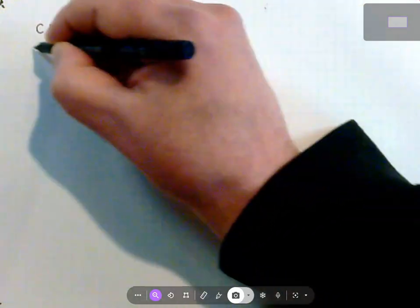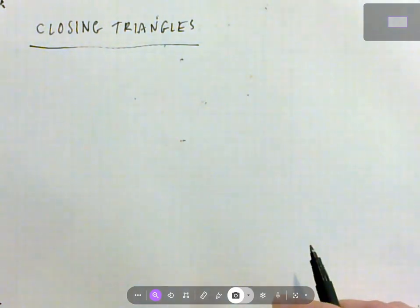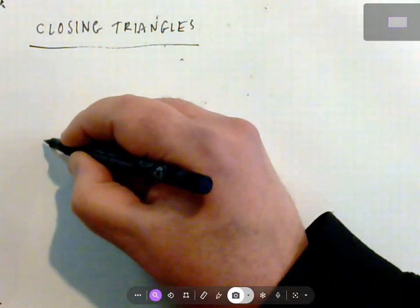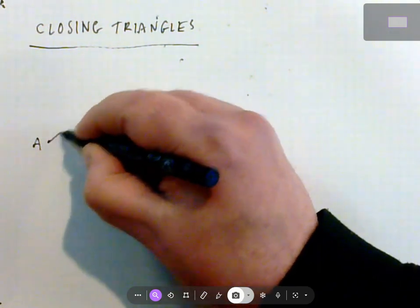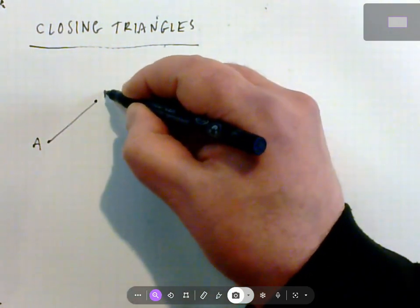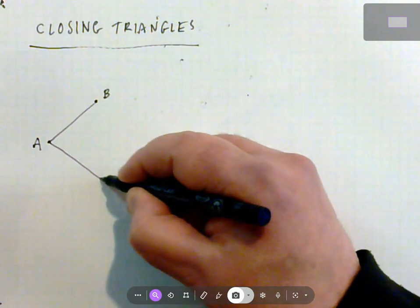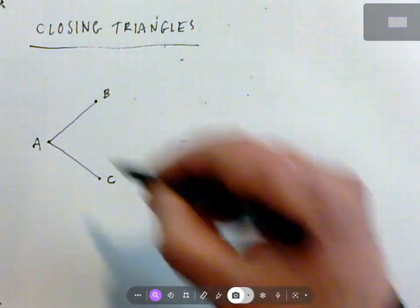Okay, I want to talk today about something called closing triangles. This is a concept from social networking and it's really simple. Imagine that I am A and I know two people, B and C. So I know B and I know C, but B and C don't know each other.